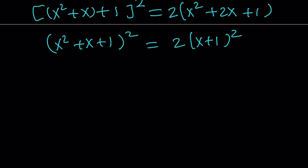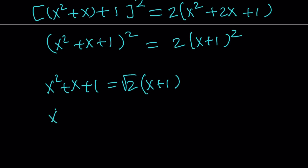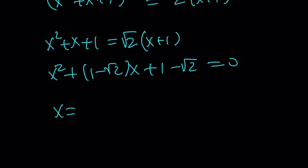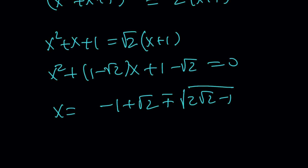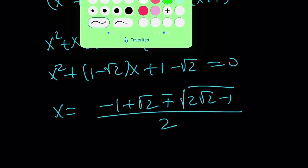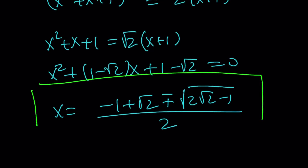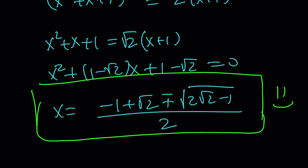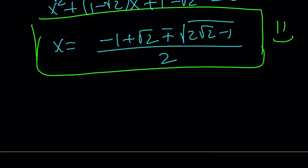Proceeding as before, one of the resulting equations gives non-real complex solutions, and the other gives a nice real solution. Writing it as a quadratic, the x values become negative 1 plus root 2, plus or minus the square root of (2 root 2 minus 1), all over 2 — the same solution as Method 1. That brings us to the end of this video. Thank you for watching, I hope you enjoyed it. Please comment and subscribe. I'll see you tomorrow with another video. Until then, be safe, take care, and bye-bye.